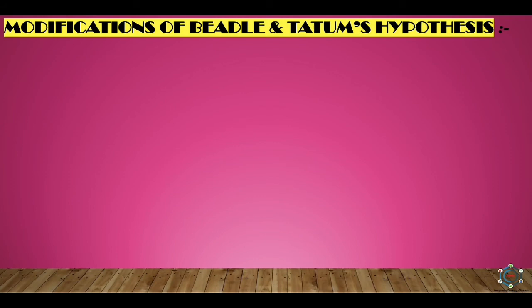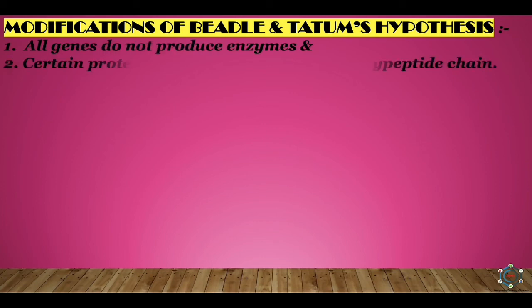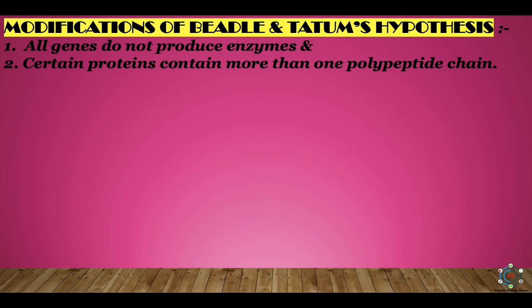Modifications to the hypothesis were needed since not all genes produce enzymes, and some proteins contain more than one polypeptide chain. For example, hemoglobin consists of two alpha and two beta polypeptide chains, and the enzyme tryptophan synthetase of E. coli consists of two polypeptides A and B, showing that more than one gene may control the synthesis of a single protein. Therefore, the one gene one enzyme hypothesis has been replaced by the one gene one polypeptide chain principle.